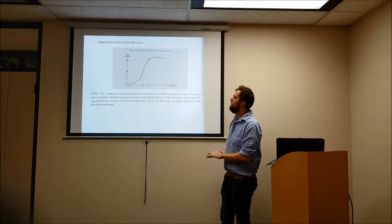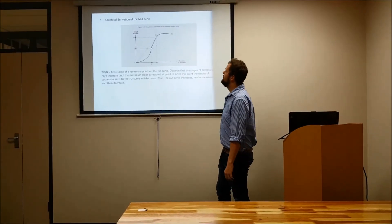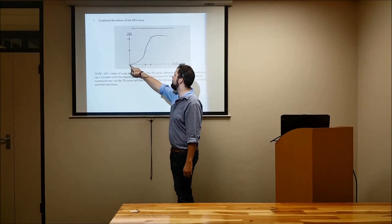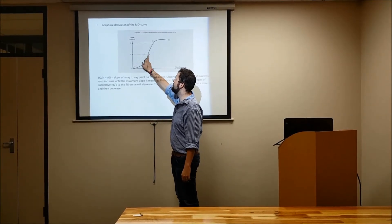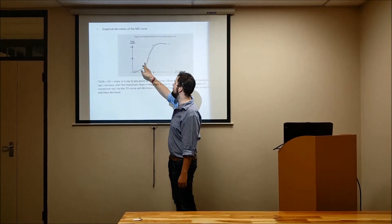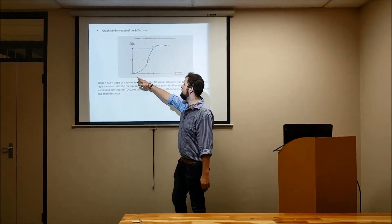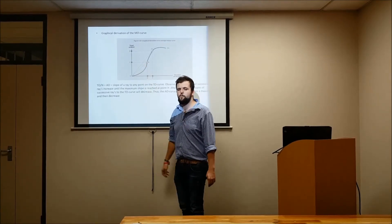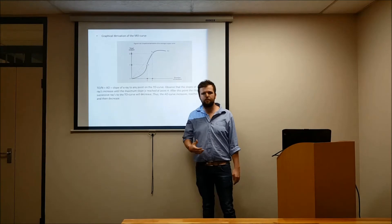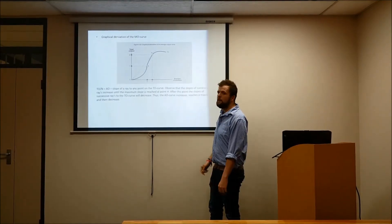Let's look at how we derive the maximum point on the average output curve. We take the total output curve and draw straight linear lines — rays — from certain points. Starting at point zero, we draw a line to point A, showing different combinations of total output and inputs, then another to point H. The maximum average output is where your slope line, or ray, crosses the total output curve at the highest possible point — where it is tangent, at point H. Point H represents your highest average output in this model.